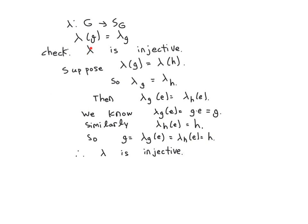So what does it mean to be injective? Well, suppose lambda of G was equal to lambda of H. That means that the permutation lambda sub G is equal to the permutation lambda sub H. Well, if you look at the previous examples, you'd notice on the cycle with 1, the element next to 1 was G.